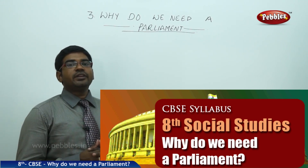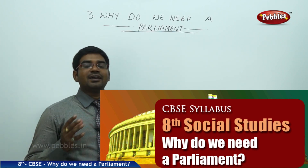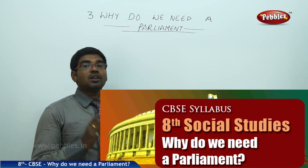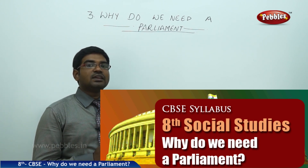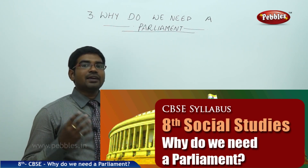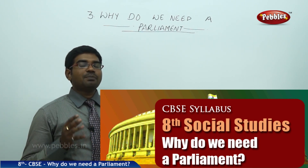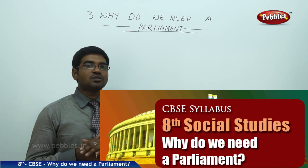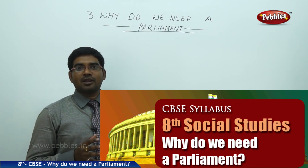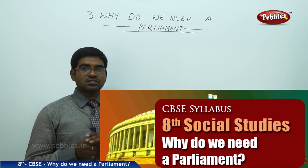Chapter 3: Why do we need a parliament? We proudly say that India is the largest democratic country in the world and has the highest number of parliamentarians. The total number of members in Lok Sabha is 545. In this chapter, we would like to analyse what is the need to have a parliament, how does the parliament function, how are the members of the parliament elected, and what is the role of the people in electing them.